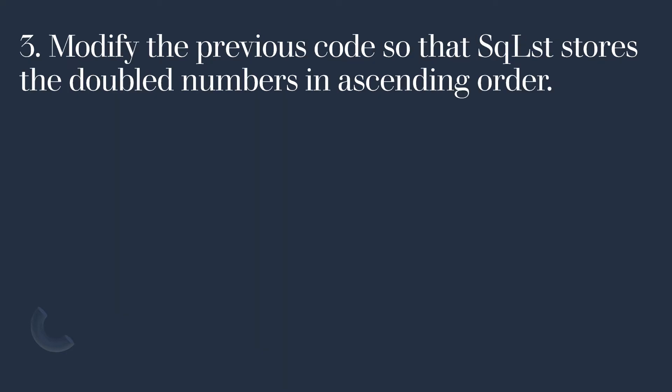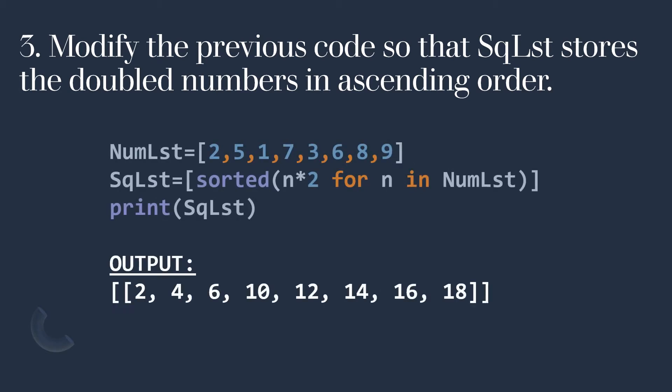Now modify the previous code so that sqlst stores the doubled numbers in ascending order. The same numlst is there, and sqlst will be [n * 2 for n in numlst], which prints the double of the elements, but it has to be stored in sorted order. So we simply use the sorted function, wrapping the list comprehension statement inside sorted(). The output is 2, 4, 6, 10, 12, and so on.